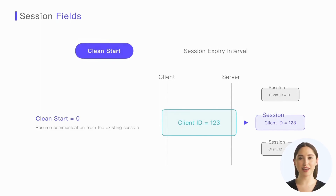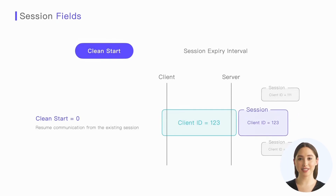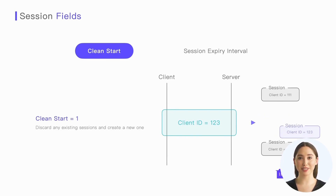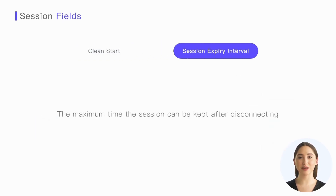Clean Start only has two possible values: 0 and 1. If set to 0, the server must resume communication from the existing session associated with the specified client ID; if no corresponding session exists, the server should create a new session. If Clean Start is set to 1, even if there is a corresponding session, it must be discarded and a new session must be created. The Session Expiry Interval specifies the maximum duration for which the session can be maintained on the server after a disconnection. The server will discard the corresponding session state if the connection fails to be restored within the expiry interval.